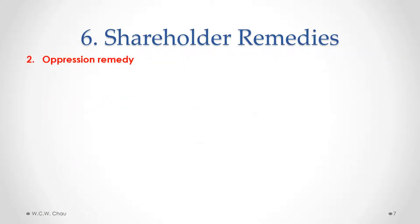The second remedy that a shareholder may have is called the oppression remedy. This also involves suing in court. With the oppression remedy, in contrast to the derivative action, the shareholder sues in their own name, not the corporation's name.